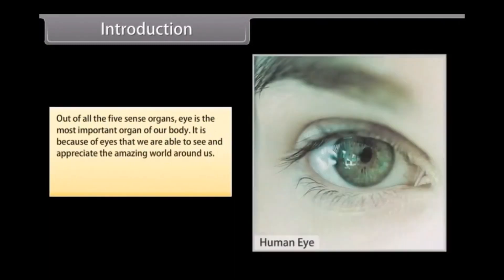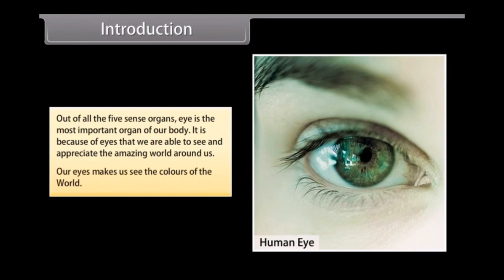Out of all the five sense organs, the eye is the most important organ of our body. It is because of eyes that we are able to see and appreciate the amazing world around us. Our eyes make us see the colors of the world.